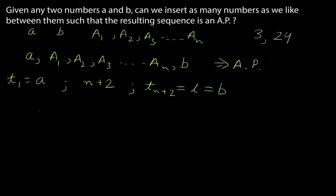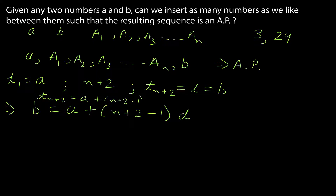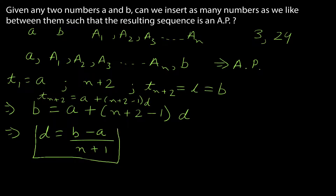For the (n+2)th term, we write: b = a + (n+2−1)·d, which gives b = a + (n+1)·d. Solving for d, we get d = (b − a) / (n + 1). So we now know the common difference d.